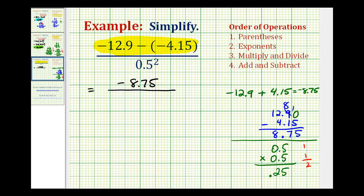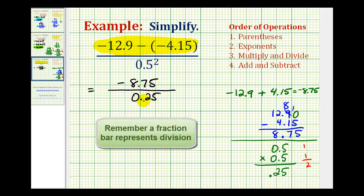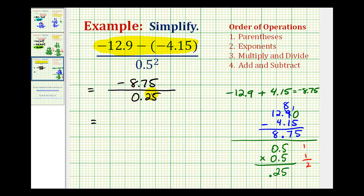Which is normally written as 0.25. If the decimal is less than 1, we normally put a 0 in the 1's place value. Now the last step here is to determine this quotient. But before we do that, notice that we have a negative divided by a positive, so this quotient is going to be negative. So now that we know the sign of this quotient, we can go ahead and divide, ignoring the signs.